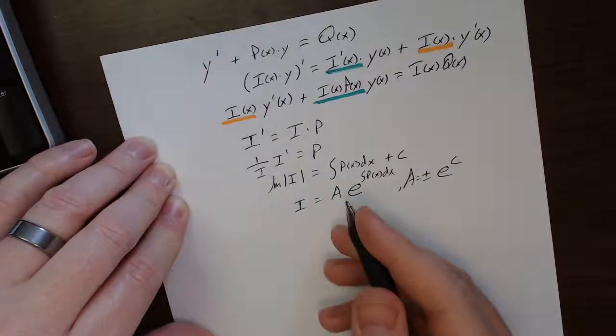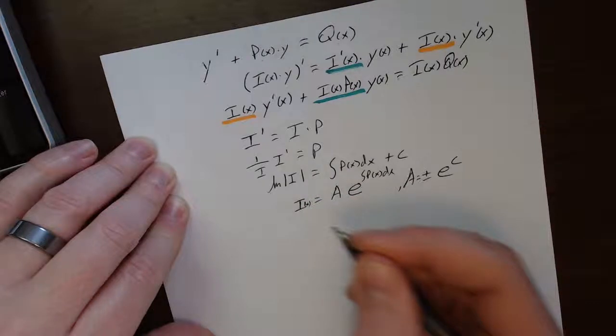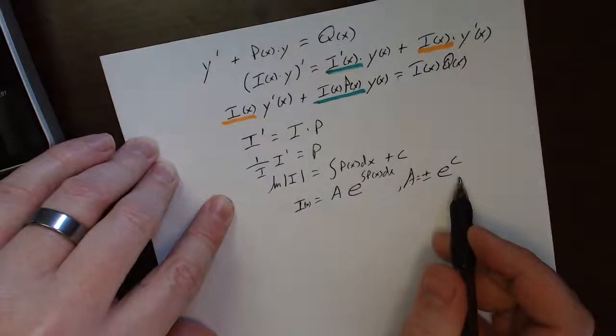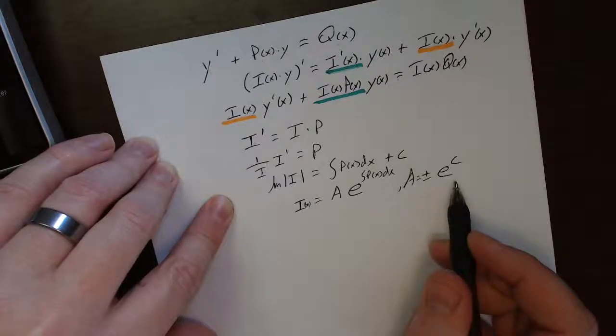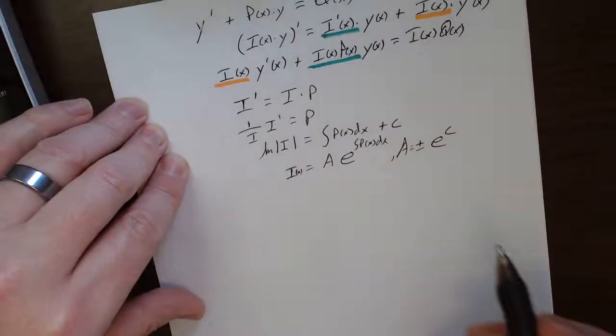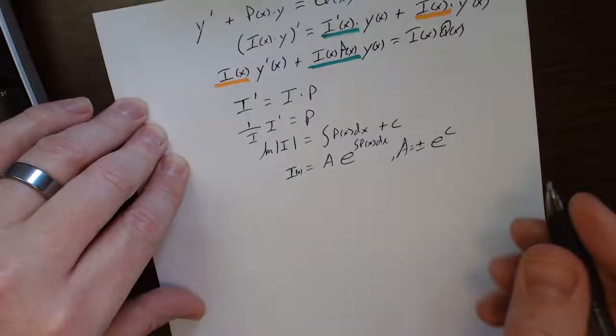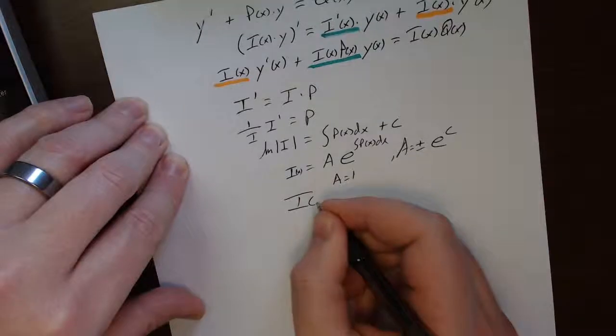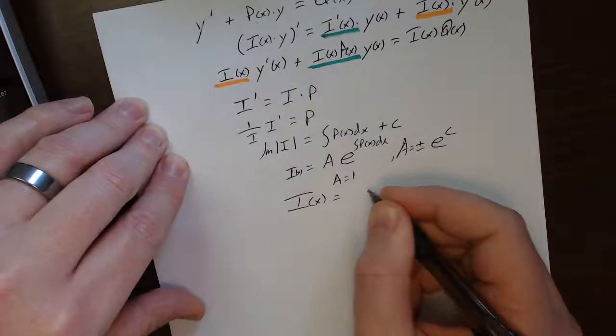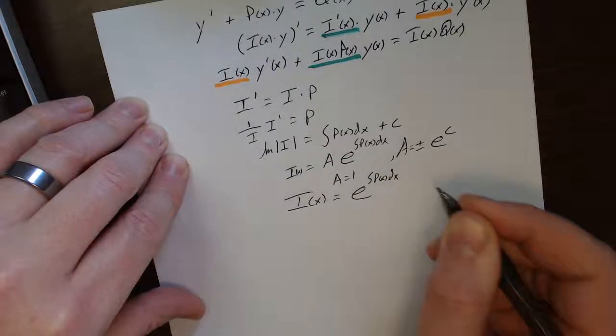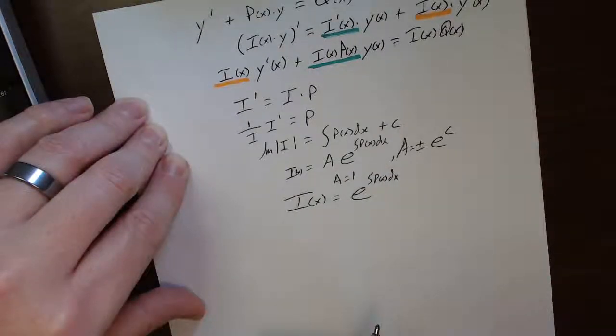Now look, we're just looking for some i of x that works. This is true. This holds true for any a. What's my favorite a? Well, you say, well, your favorite a is zero. Well, you're right. That would be awful to multiply both sides by zero. Not very interesting. My next favorite one is one. So let's let a be one. So let's use an integrating factor of i of x equals e to just the principal anti-derivative of p of x.